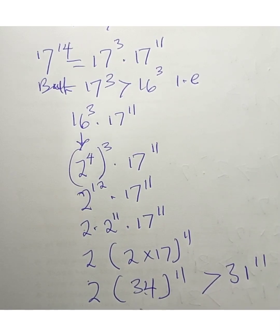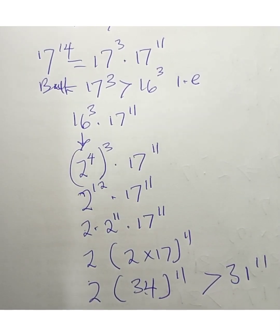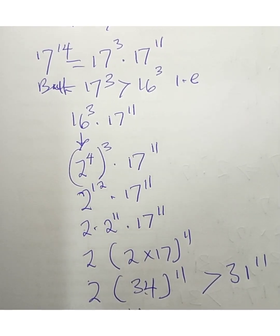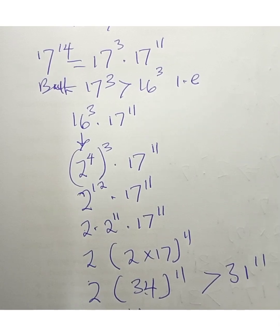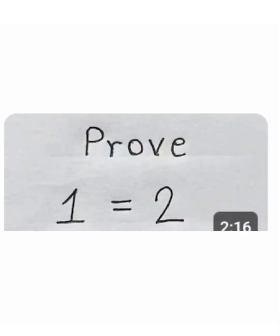This result — 2 times 34 to the power of 11 — is greater than 31 to the power of 11. Hence we can conclude that 17 to the power of 14 is greater than 31 to the power of 11.